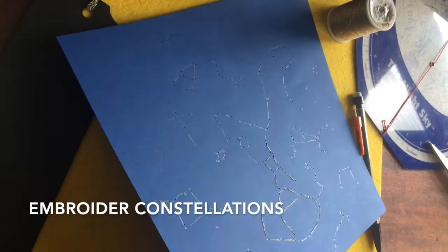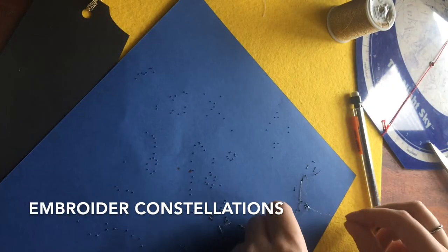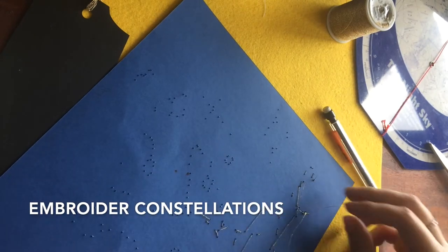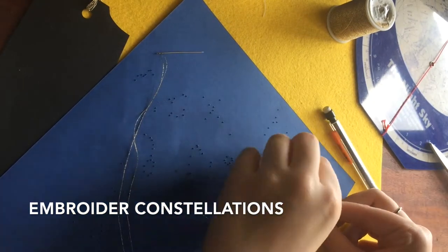Next, you just follow the pattern, frequently flipping over the paper to make sure the thread doesn't snag. If the thread does snarl, loosen the knot and gently pull on it until it detangles.